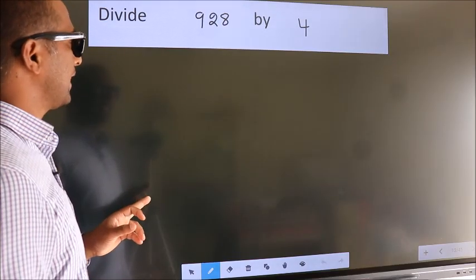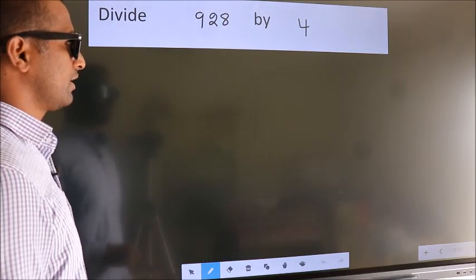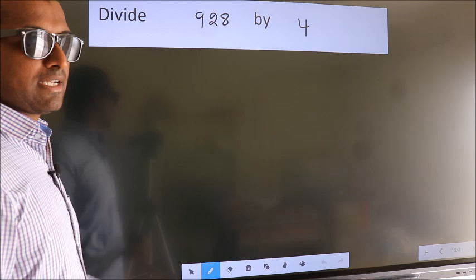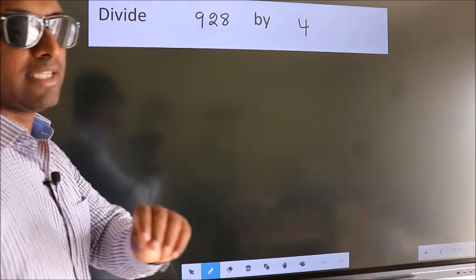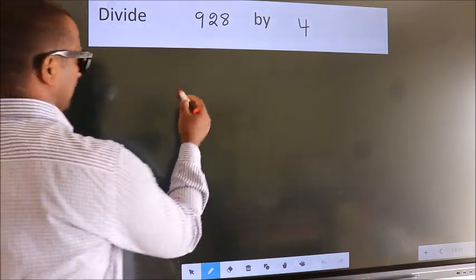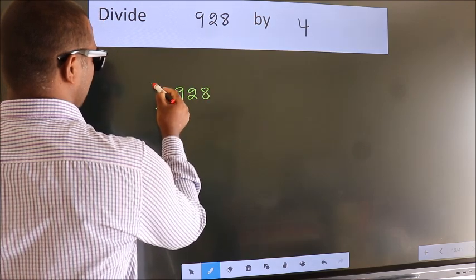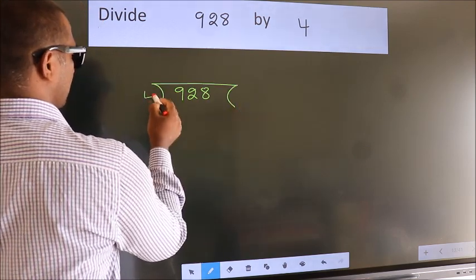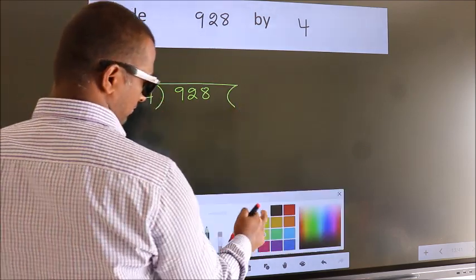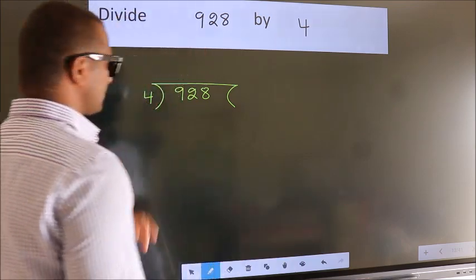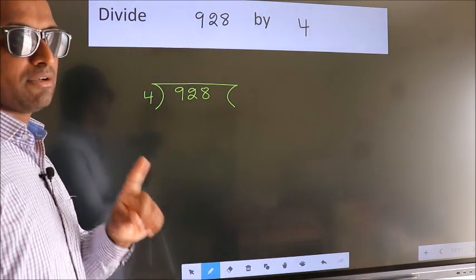Divide 928 by 4. To do this division, we should frame it in this way. 928 here, 4 here. This is your step 1.